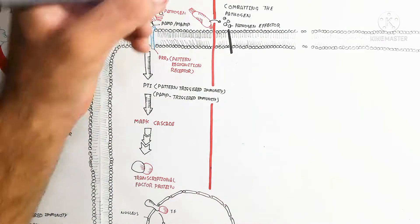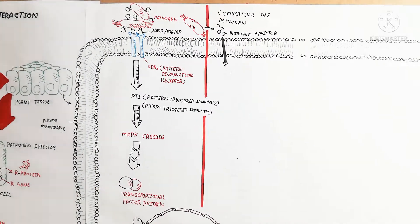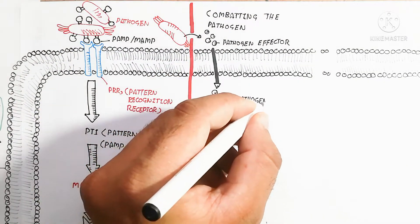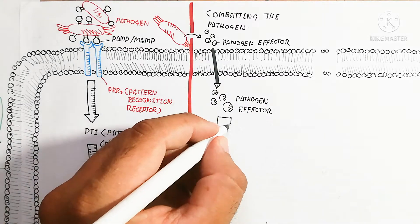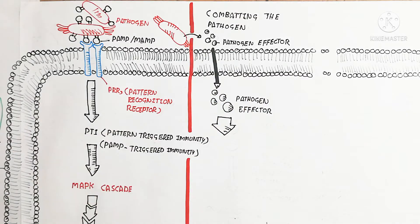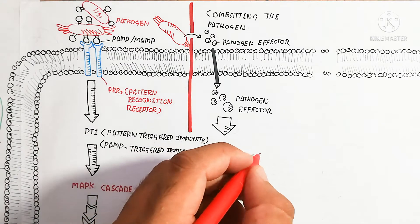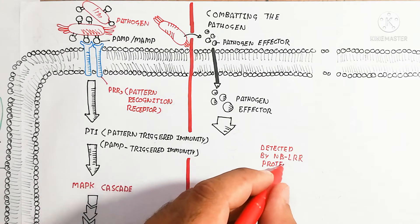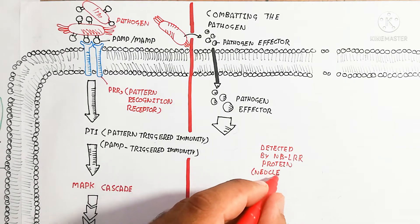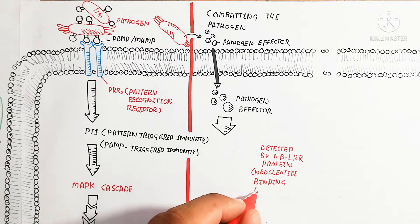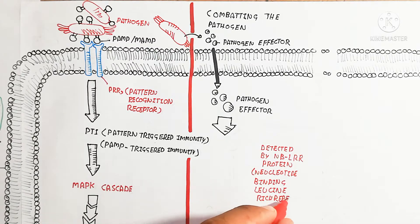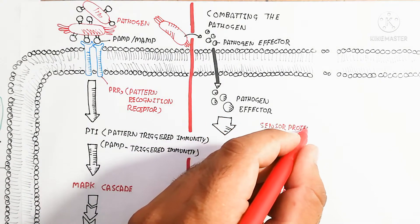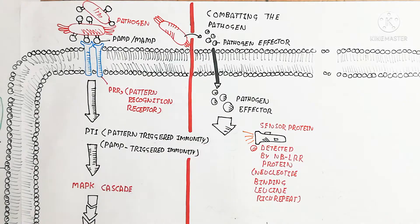On the other hand, there is ETI — effector-triggered immunity. The pathogen contains an effector, and this pathogen effector moves inside the cell. A sensor protein detects this effector, and it is then sensed by the NBS-LRR protein (nucleotide-binding leucine-rich repeat protein).